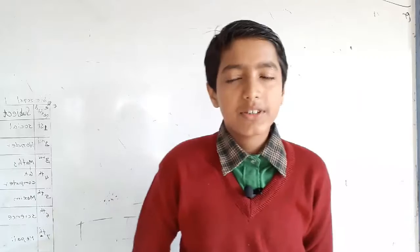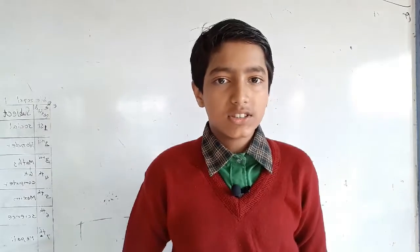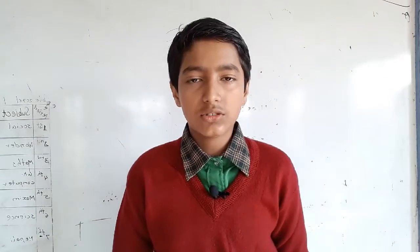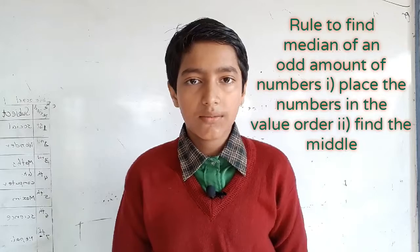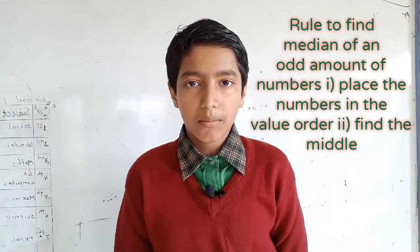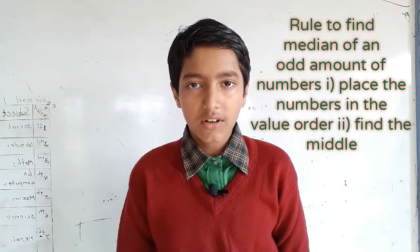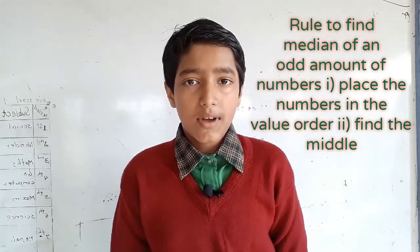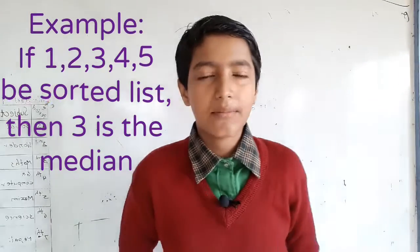Thank you. Friends, my name is Srijangiri. I'm from Batsholi, Ranapa 6. I read in class 8 in Green Society Public School. I'm talking about the rule to find the median of an odd number. First step: you place the numbers in value order. Second step: find the middle.